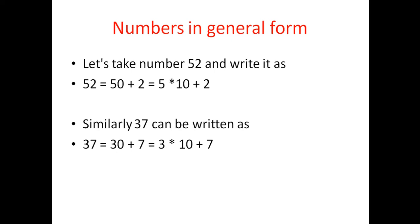You would have learnt in your lower classes about ones place, tens place, hundreds place, and how a number can be expanded — that is the general form. For example, 52 can be split into 50 plus 2. The 2 is in the ones place, so 2 into 1. The 5 is in the tens place, so 5 into 10, giving 50.